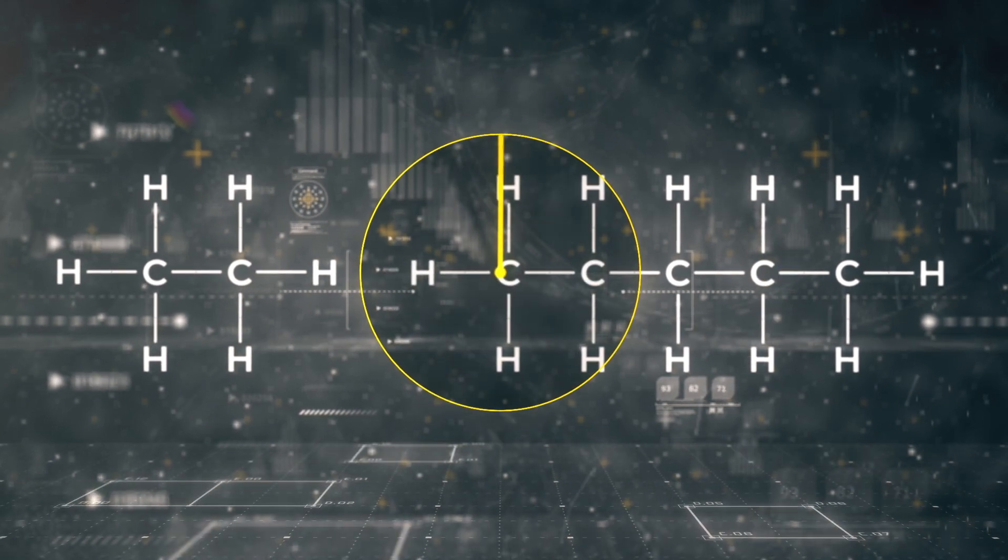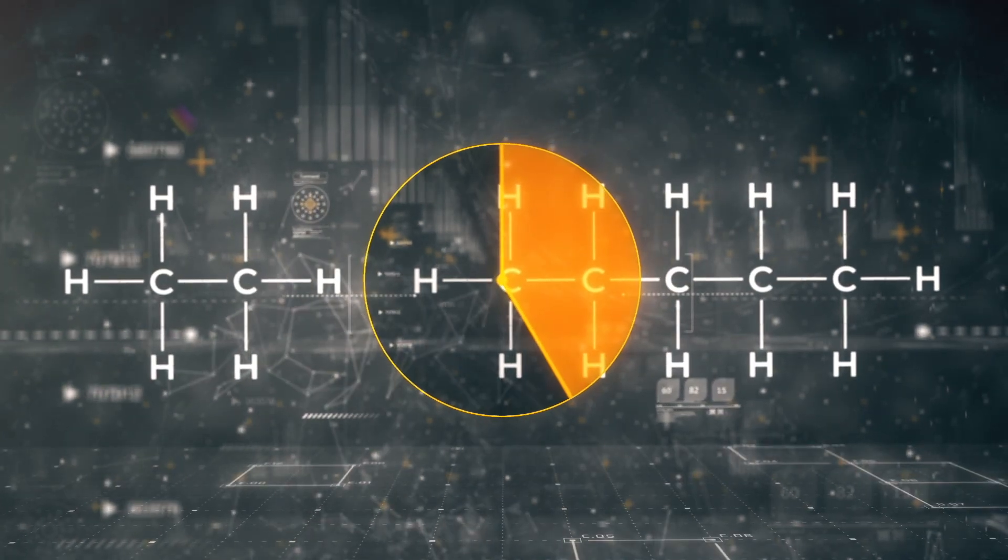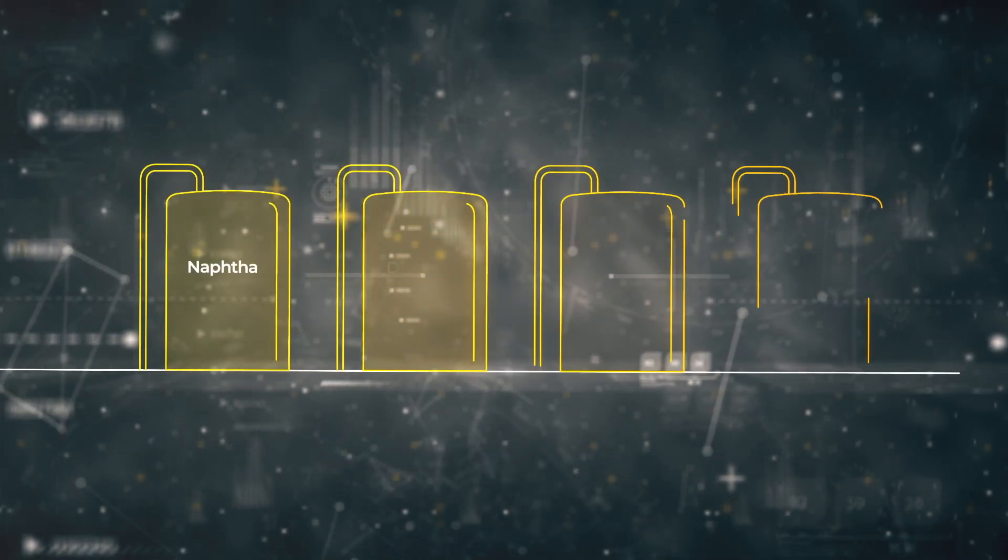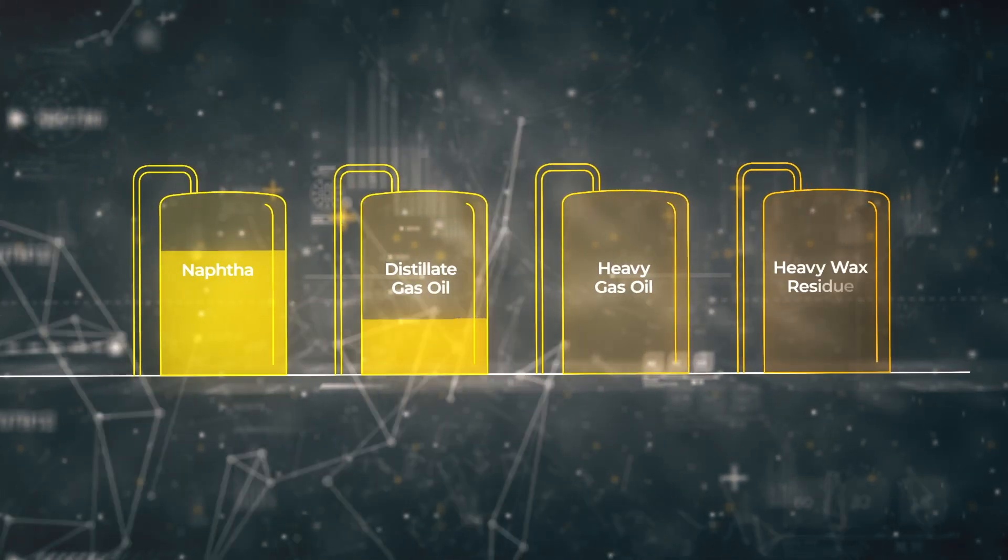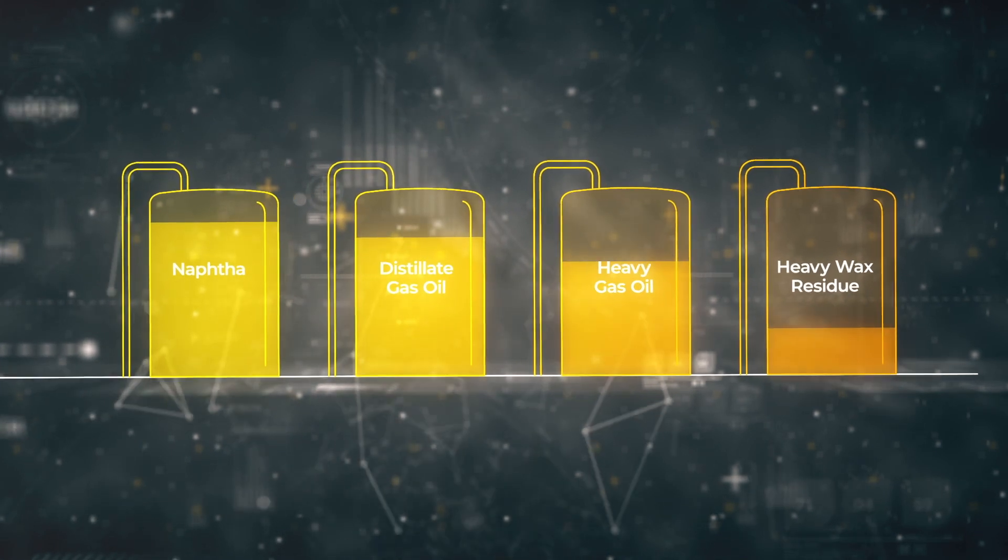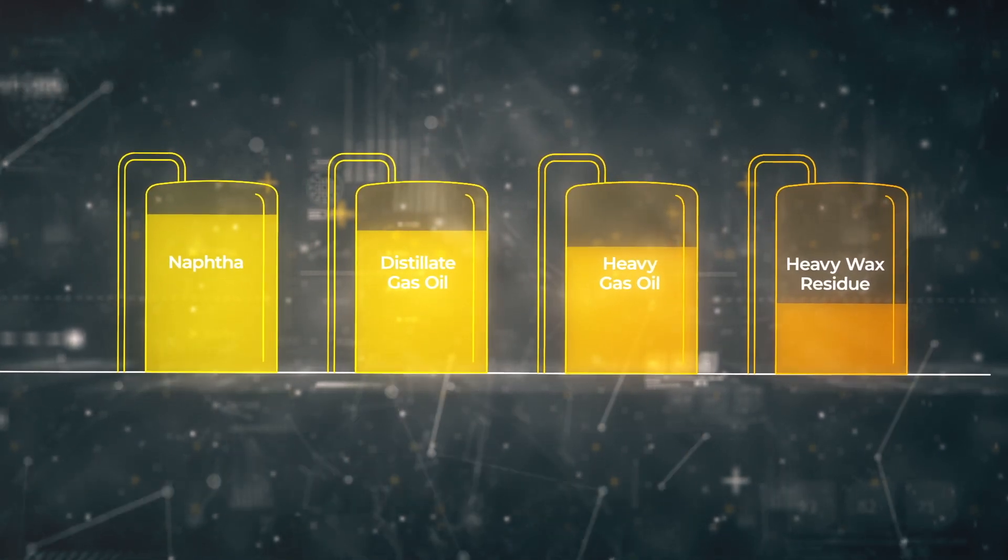This conversion process takes approximately 25 minutes. Following conversion, flash distillation separates out the individual product fractions for use in the petrochemical industry with very little waste produced.